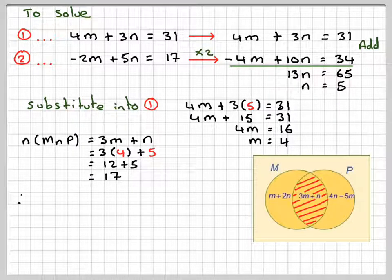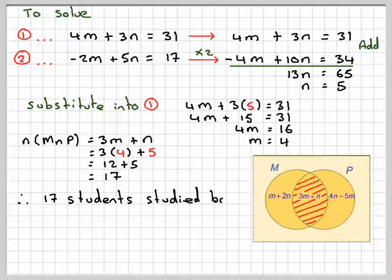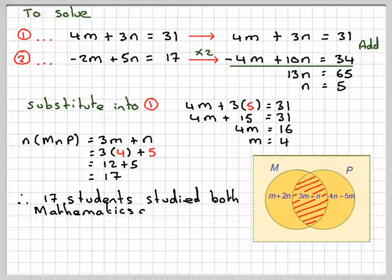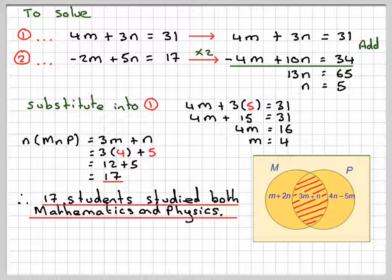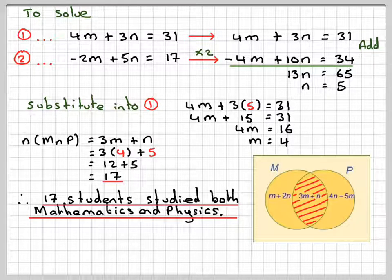And what we have found there, what this means, is that 17 students study both mathematics and physics. So this has been a video to show you how to solve a Venn diagram, form simultaneous equations, find some values, and then use that to work out some values on the Venn diagram. So I hope you understood, and I thank you very much for watching.